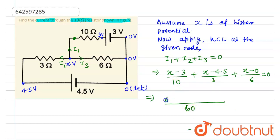This will be 6 times x minus 3. This will be 20 times x minus 4.5, and this will be equals to 10 times x equals to 0.